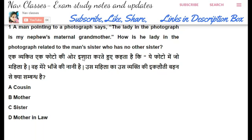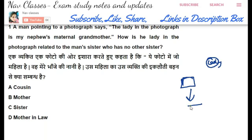Question 1: A man is pointing to a photograph. There is a lady in the photograph — we denote the lady with a circle. The man says: the lady is my nephew's maternal grandmother. 'My' means the man is speaking about himself, denoted with a box. The nephew is male, with a generation gap arrow. The lady is this nephew's maternal grandmother — grandmother from the mother's side. So there must be a mother of this nephew in between.